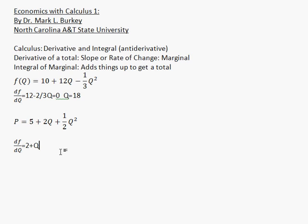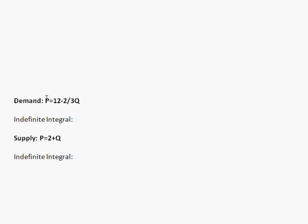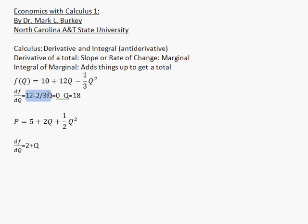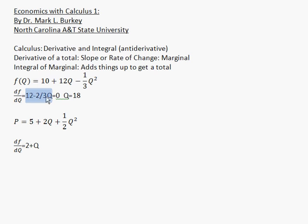What if we wanted to go in the opposite direction? If we had a demand curve p = 12 − 2/3 q and we wanted to take the integral, we do the opposite of differentiation: rather than subtracting 1 from the exponent and multiplying by the exponent, we add 1 to the exponent and divide by the new exponent. Notice that 12 − 2/3 q is the same derivative we got earlier, so the antiderivative of 12 − 2/3 q, working in the opposite direction, gives us back that original function.